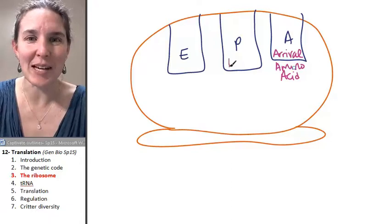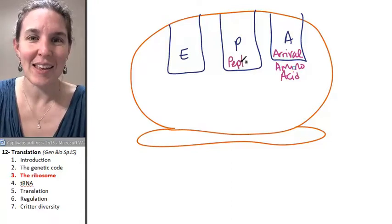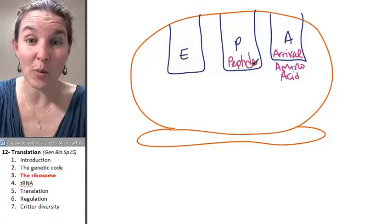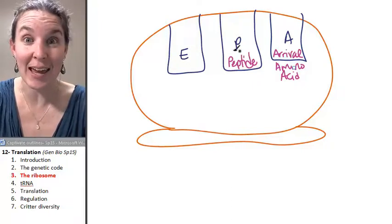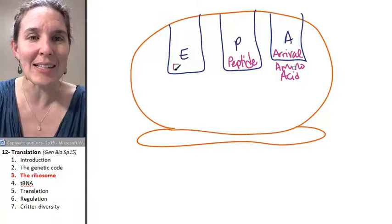P is the peptide site. This is where, peptide is another word for protein, so this is where our growing protein is going to hang out and chill. And E is the exit site.